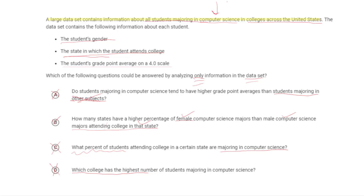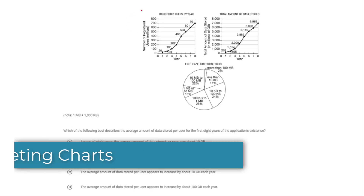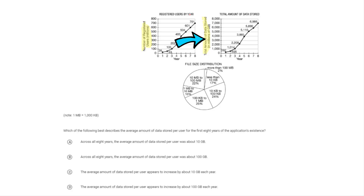Now let's look at a trickier problem. It contains extra information at the top that we don't actually need. What we need are just the two charts: on the right, the total amount of data stored in millions of gigabytes, and on the left, the number of registered users in millions. The question asks what the charts tell us about the average amount of data stored per user for the first eight years of the application's existence.